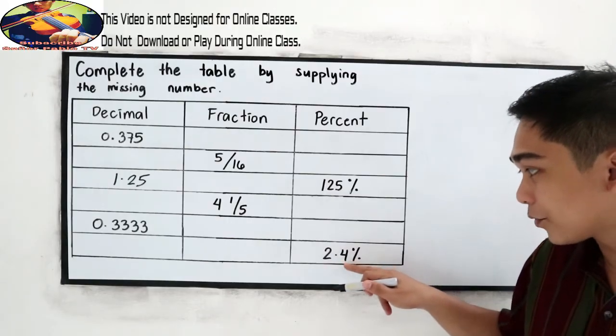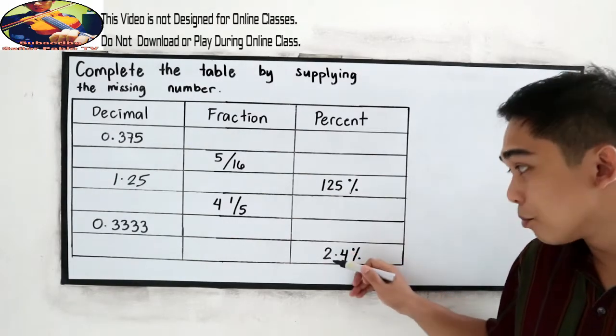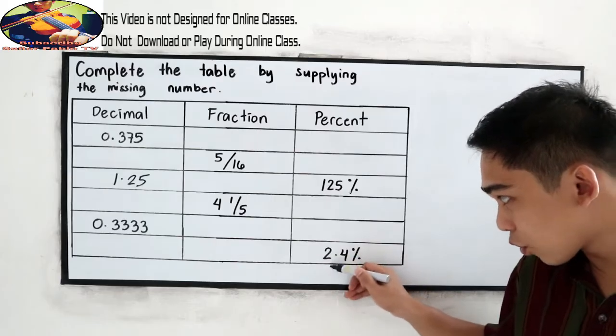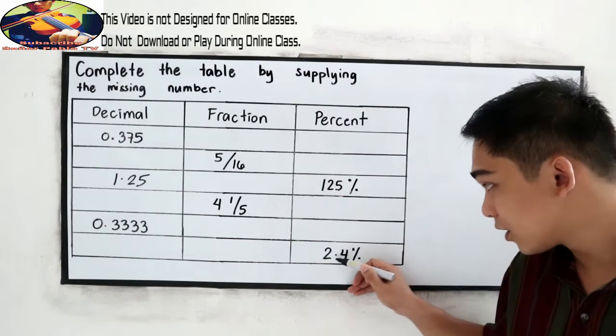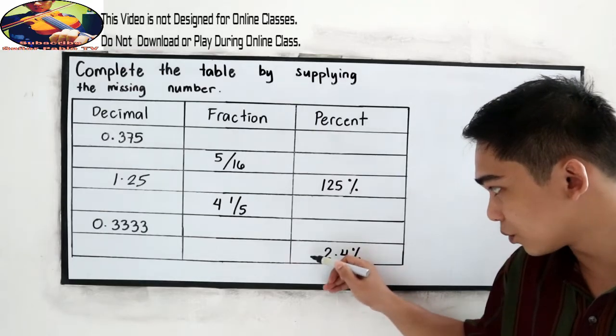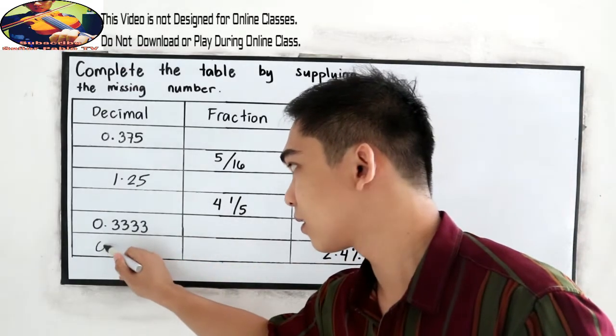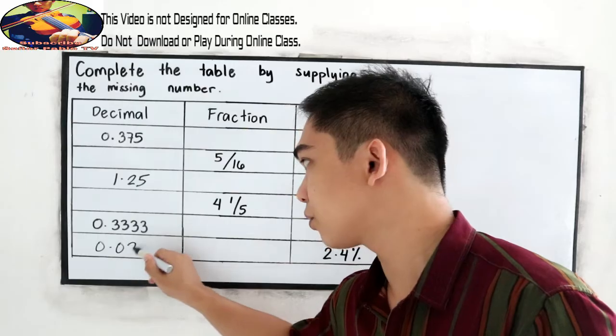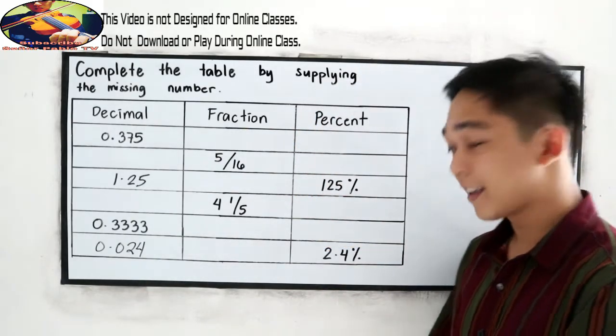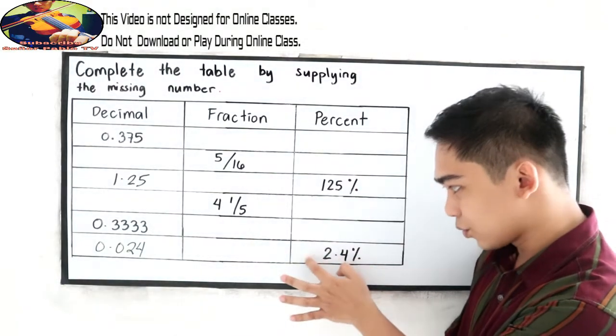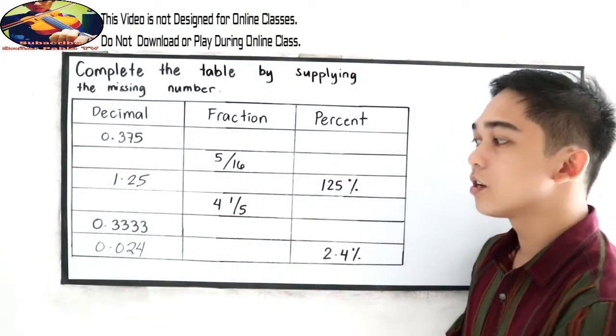Next, 2.4 percent. Move two to the left. So here is our decimal point. First, you need to locate. So move to the left, 1, 2. So that is 0.024. Again, let us repeat. 1, 2. So we have zero here, then 0.024.